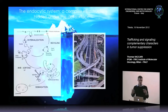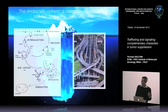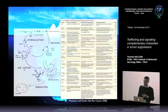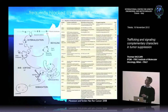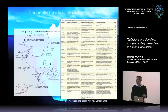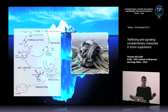Why are we interested in understanding trafficking in the context of signaling? Because there are several examples of alterations in trafficking described in tumors. Here you have a list of proteins that are very well known to be mutated and altered in tumors that relate to trafficking in the cell — essentially many examples where the infrastructure is severely altered and contributes to the tumor phenotype.